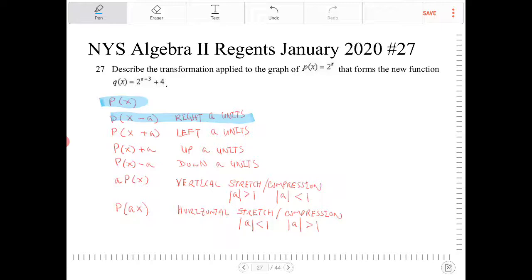If I add a units to x, that will translate it a units to the left. If I add a to the parent function, that will shift the entire function up a units. If I subtract a units from p(x), that will shift it down a units.